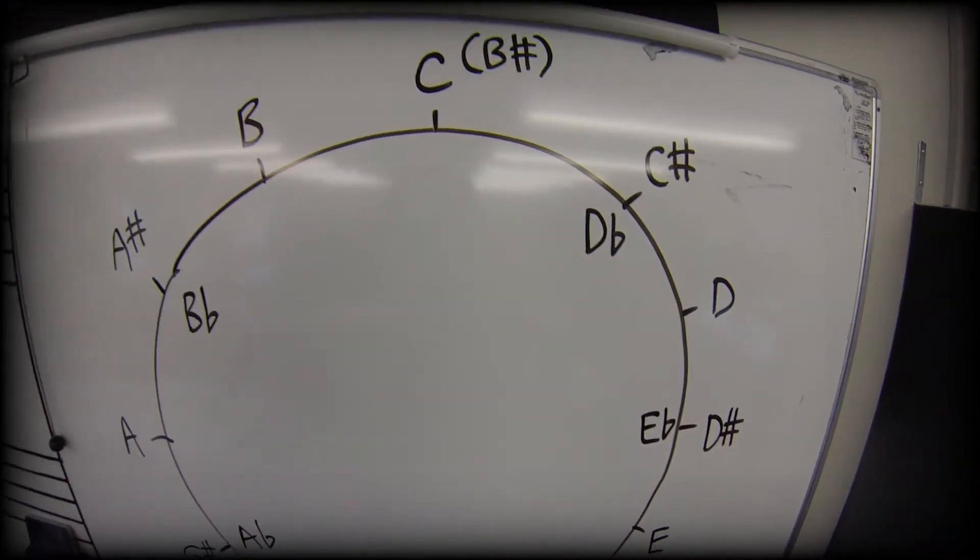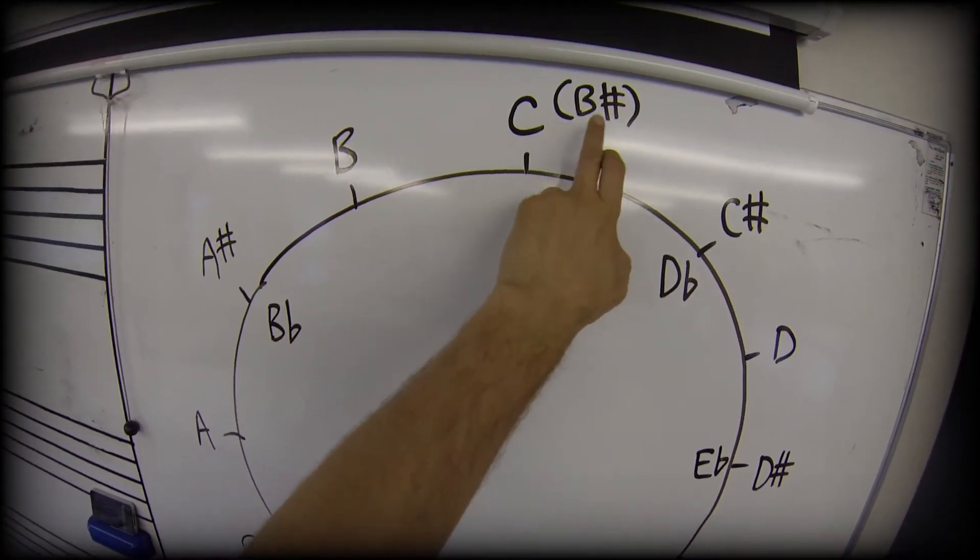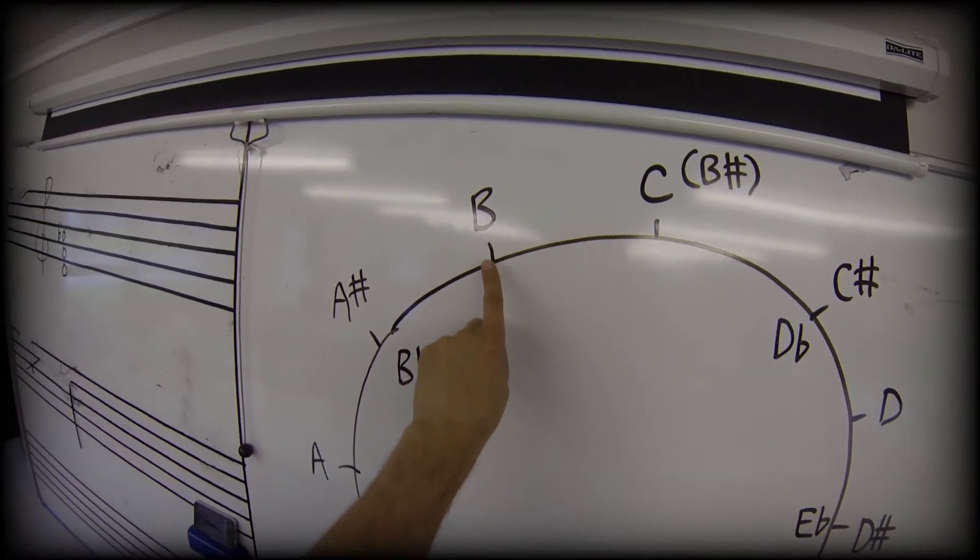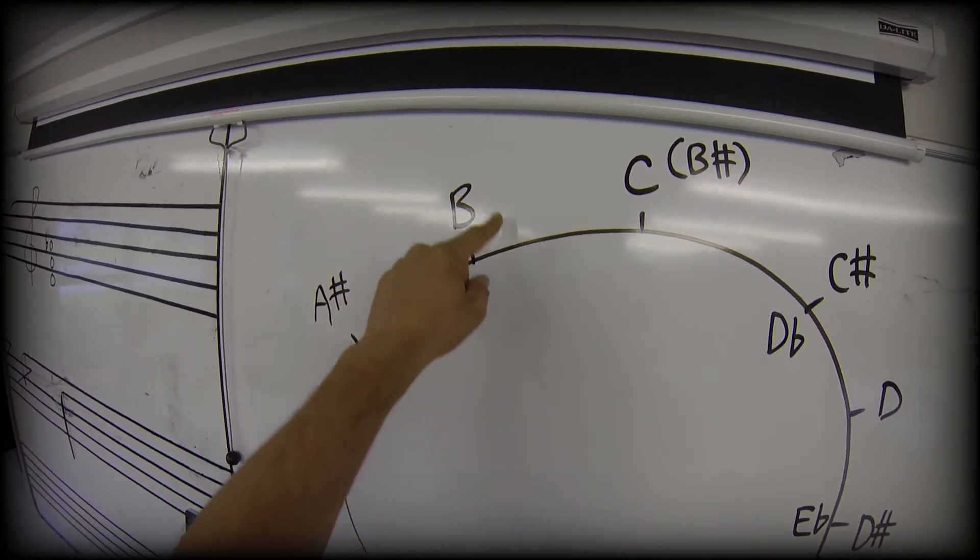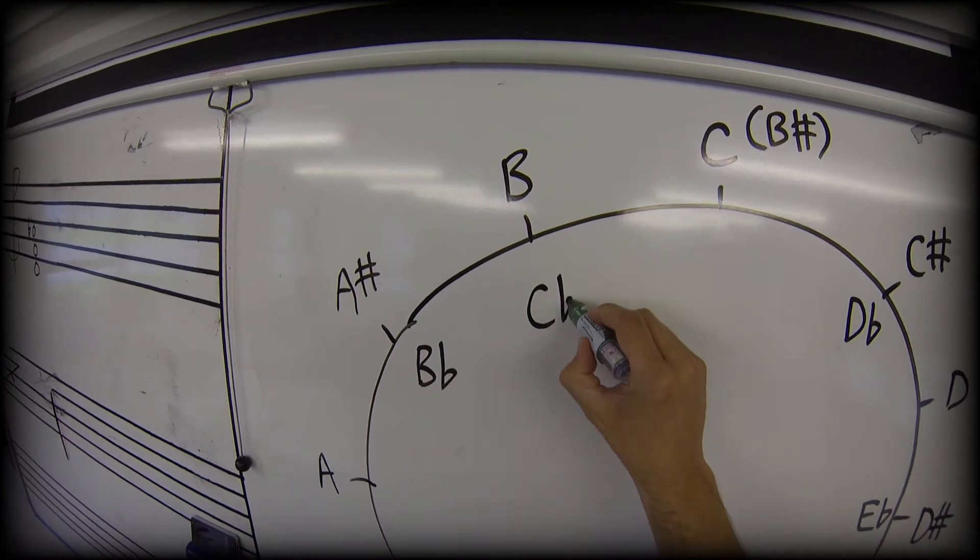And just like we had that strange two names for the C and B sharp, I can flatten a C. And so an alternative name for this step on the clock is C flat.